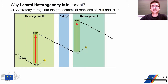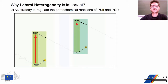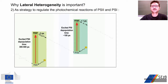But why is the separation so important? One of the reasons is related to the different kinetics of PS2 and PS1. If we consider the first step of each photoreaction, we observe a different speed in the photochemical reaction between PS1 and PS2. Because of this, PS1 is called the fast photosystem and PS2 is called the slow photosystem.